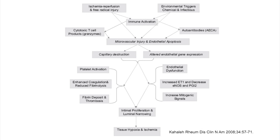In summary, patients develop bad digital ulcers in scleroderma through a cascade: an environmental trigger activates the immune system, antibodies are produced, inflammation occurs, and the endothelium or blood vessel lining is injured. This leads to capillary destruction, platelet activation with little clots forming, and dysregulation of hormones - endothelin-1 goes up causing vasoconstriction, nitric oxide goes down, and prostaglandins which open blood vessels are decreased. This leads to scarring in the blood vessel, luminal narrowing, decreased blood flow to the tissues, and tissue injury.